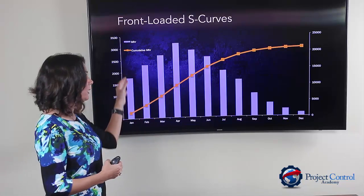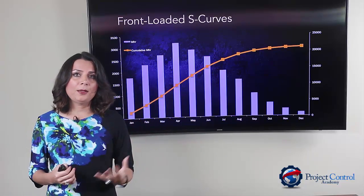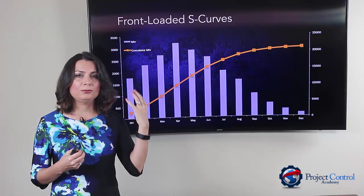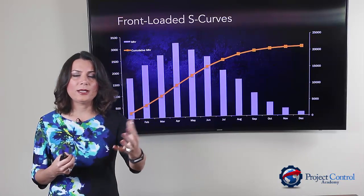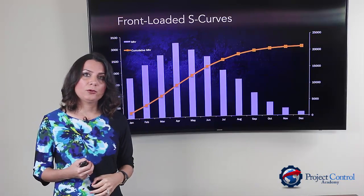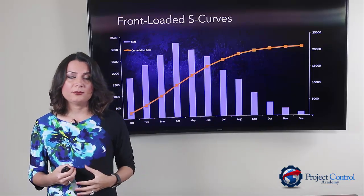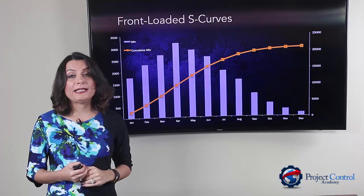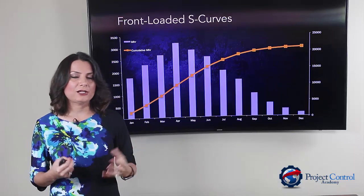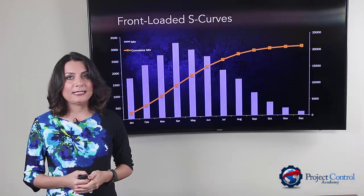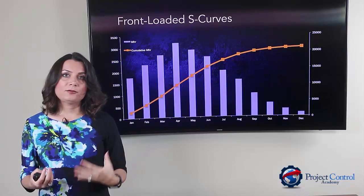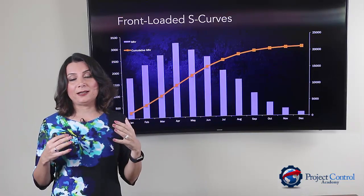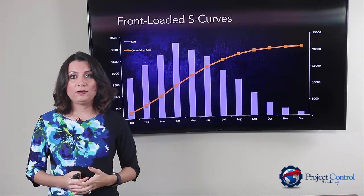If you are drawing cost information, mobilization costs or deposits that you put for some procurement items tend to create a front-loaded shape for your cash flow curve as well. These are some examples of projects where you may see a front-loaded S-curve forming.